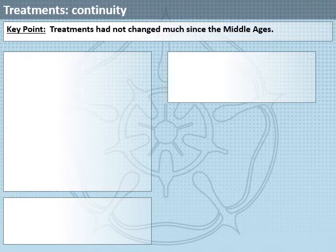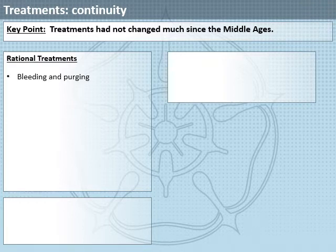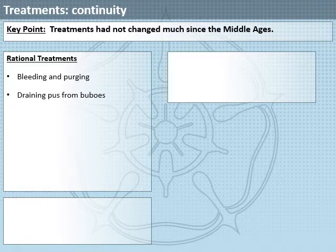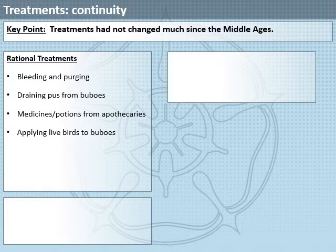Let's look at treatments. Again, we have continuity here - our key point is that treatments had not changed much since the Middle Ages. Rational treatments were similar: bleeding and purging, draining pus from buboes, applying medicines or potions from apothecaries, and applying live birds to buboes to suck out the infection.